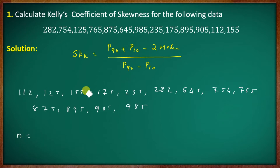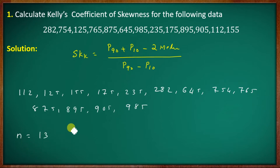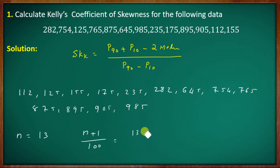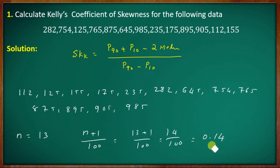Counting positions 1 through 13, we have 13 observations. For P90, we compute 90 into (n+1) divided by 100, which is 90 into 14 divided by 100, giving 12.6.